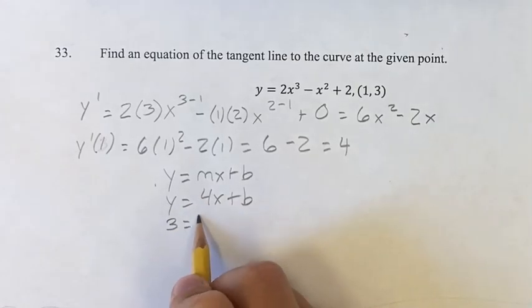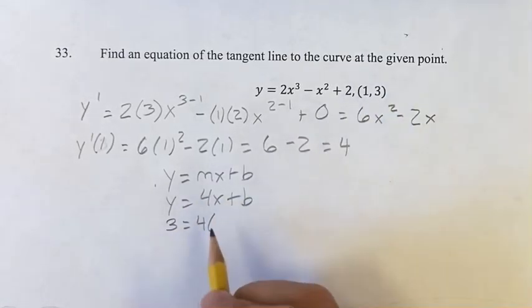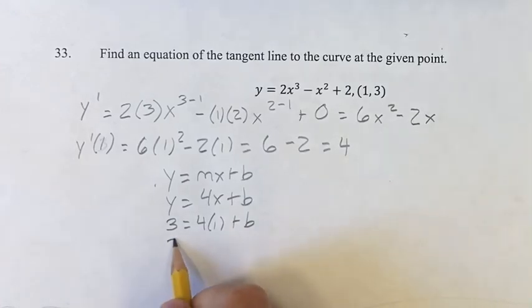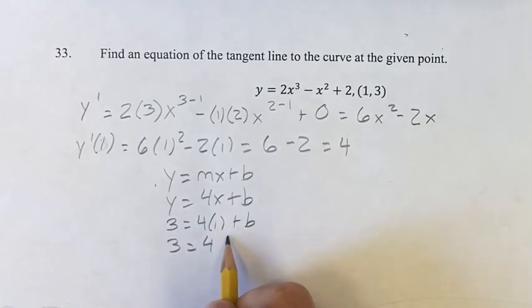So y is 3, which is equal to 4 times x, which is 1, plus b. 3 is equal to 4 times 1 is 4, plus b.